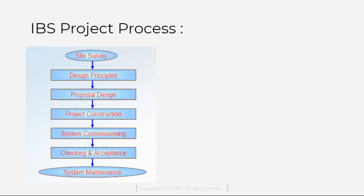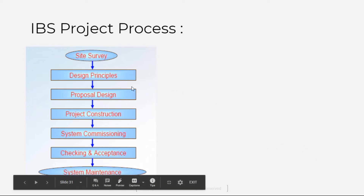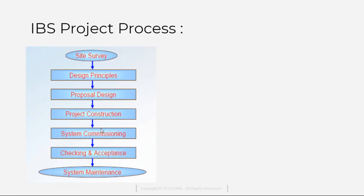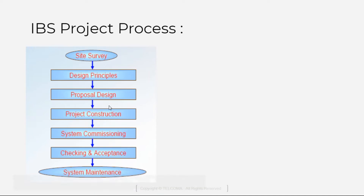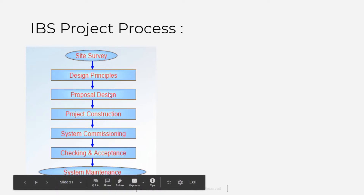The IBS project process starts with the site survey, then we have design principles, proposal design, then project construction, system commissioning, checking and acceptance, and then system maintenance. This is a flow diagram of the IBS project process.